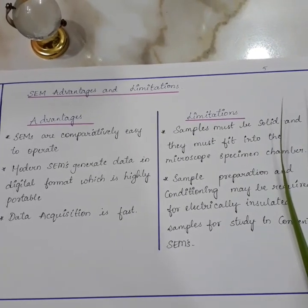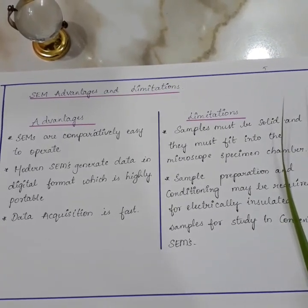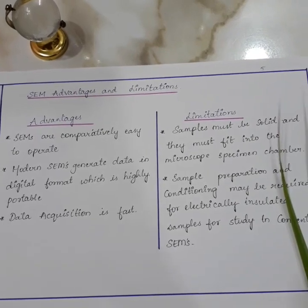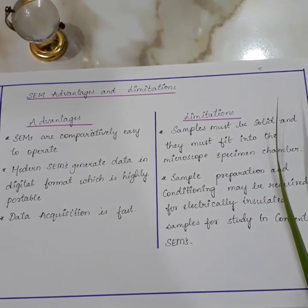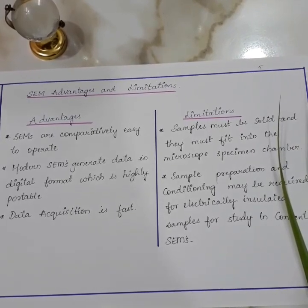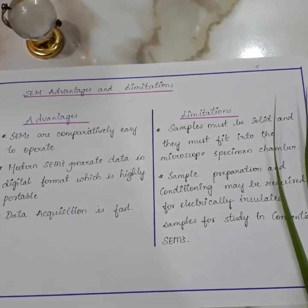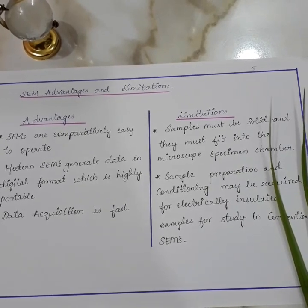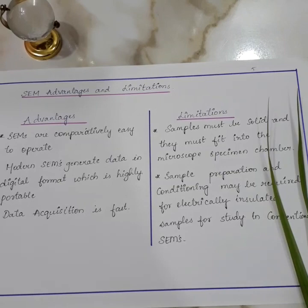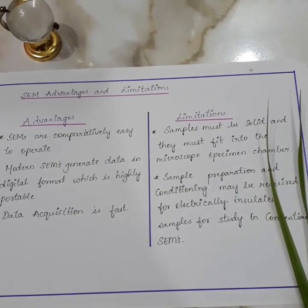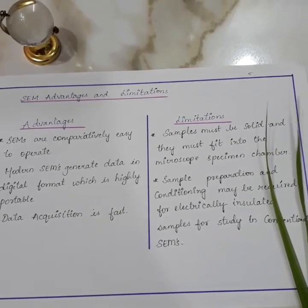SEM advantages and limitations: The advantages include that SEMs are comparatively easy to operate, modern SEMs generate data in digital format which is highly portable, and data acquisition is fast. The limitations are that samples must be solid and must fit into the microscope specimen chamber, and sample preparation and conditioning may be required for electrically insulated samples for study in conventional SEM.